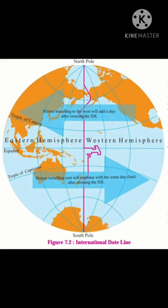Due to the rotation of the Earth, different places observe different timings of sunrise, sunset, and midnight. Earth rotates towards the east, hence the places in the east are always ahead of places in the west. When it is noon on the prime meridian, for example, Greenwich time is ahead by 2 hours at every 30 degree longitude to the east of Greenwich.